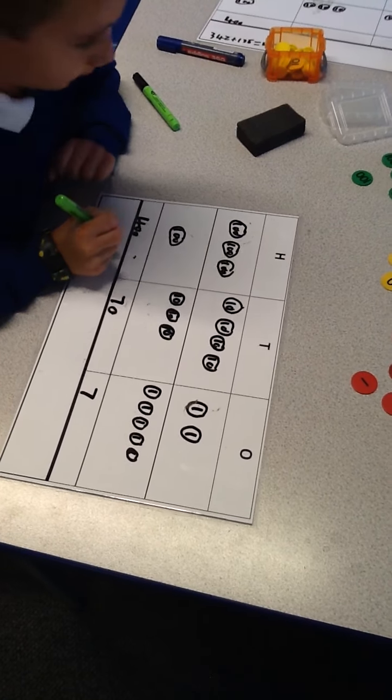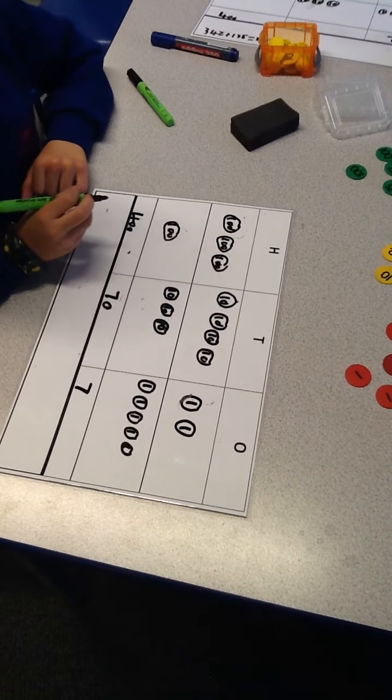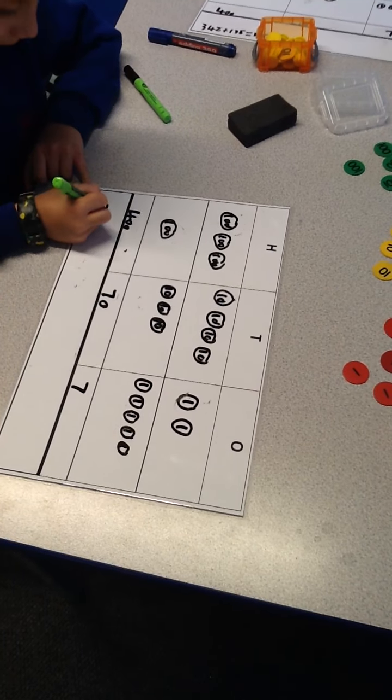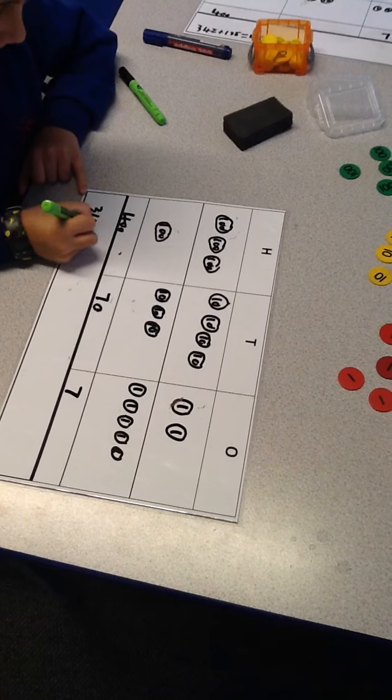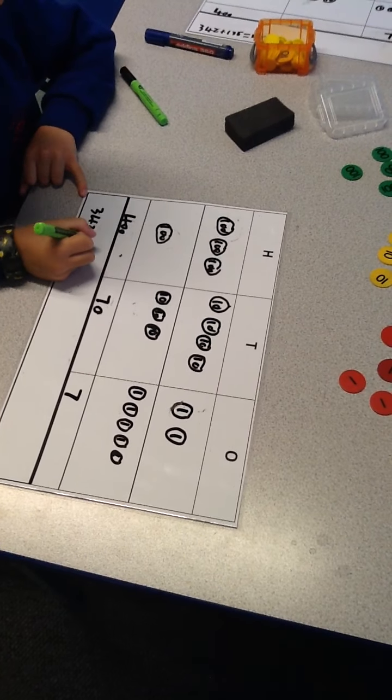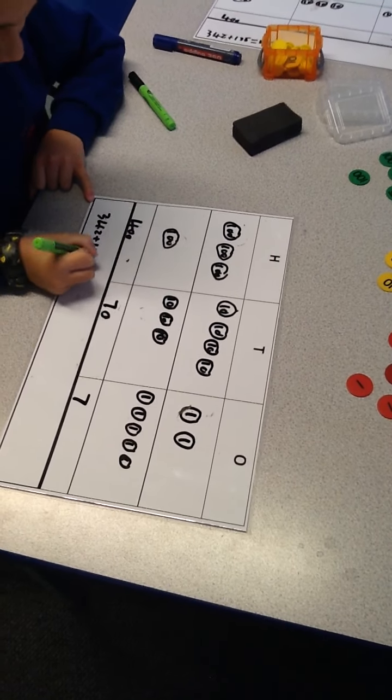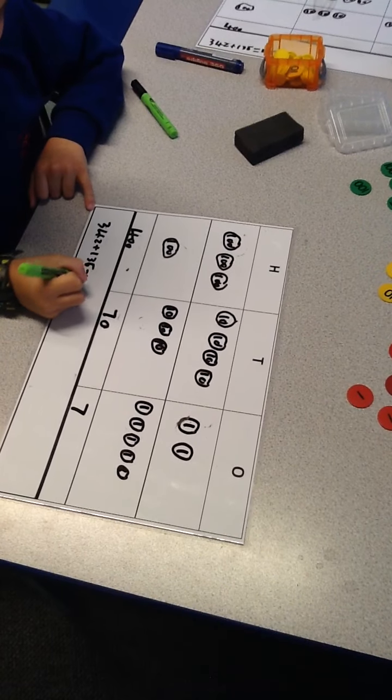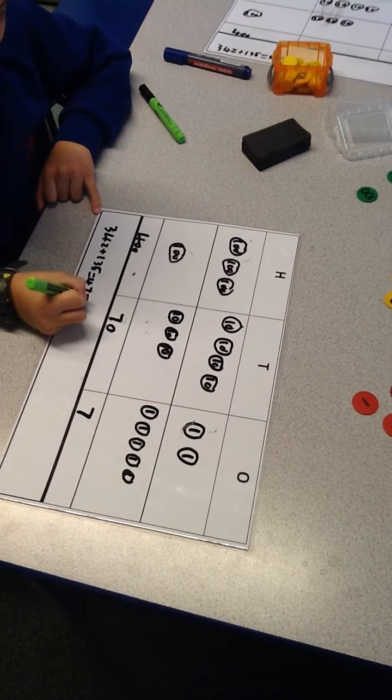Now I can do my calculation. 342 and 135 equals 477.